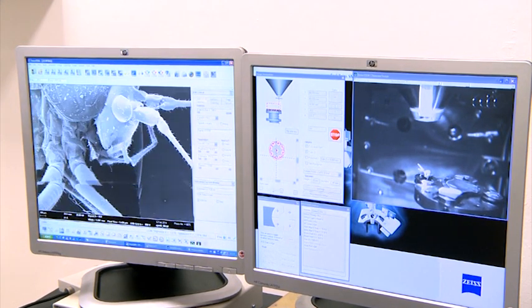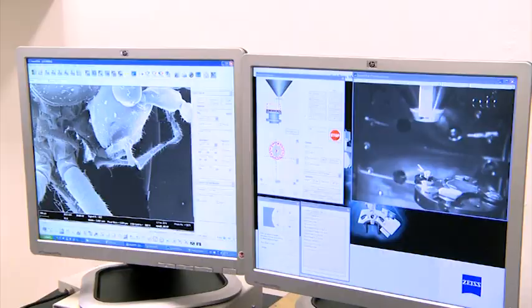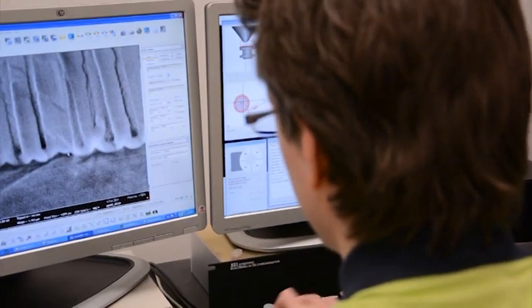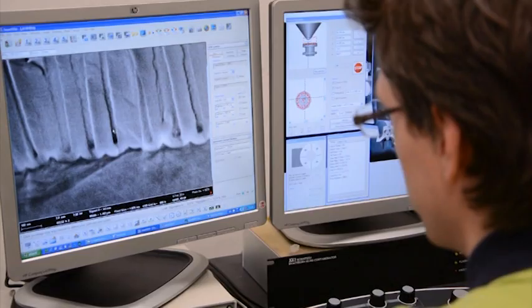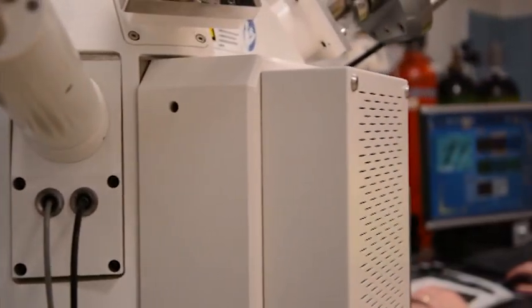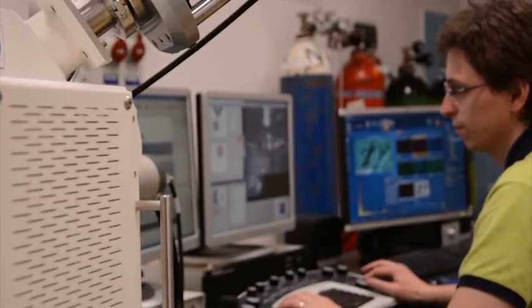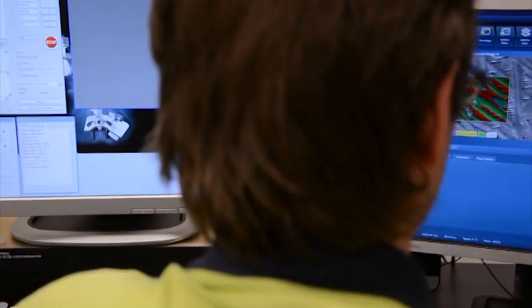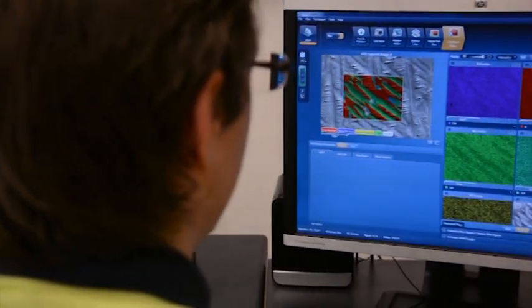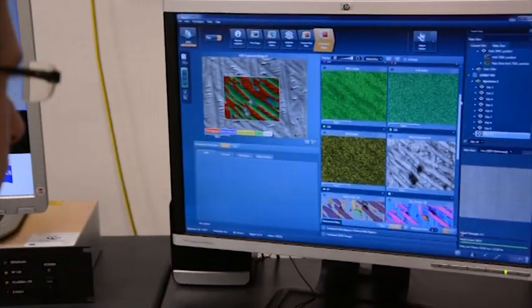Umožňuje zobrazení detailů o velikosti řádově jednotek nanometrů a je schopen také zobrazovat s vynikající hloubkou ostrosti. Mimo vlastní zobrazování je možno provádět velmi přesné lokální i plošné chemické analýzy a analýzy fázového složení pomocí elektronové difrakce.